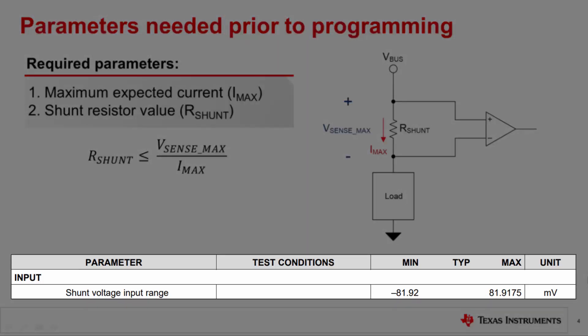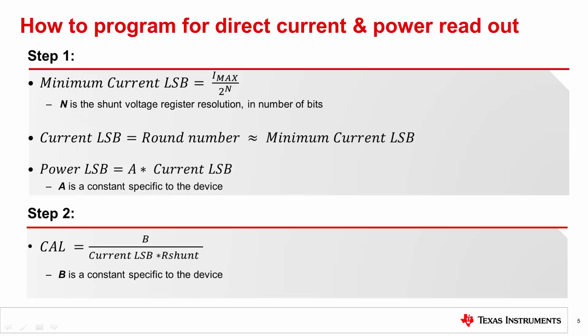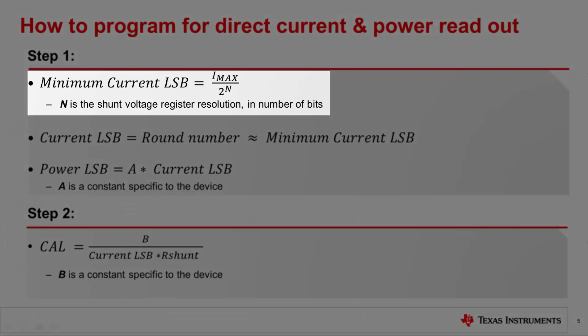Here is a snapshot of the INA233 datasheet that shows the VSENSE maximum and minimum limits. There are a few additional considerations in selecting an appropriate shunt resistor, which is covered in another video in this series. Once we know the maximum expected current and shunt resistor value, programming the device is a simple two-step process. Step 1 is to compute the minimum current least significant bit, or LSB, for the application.